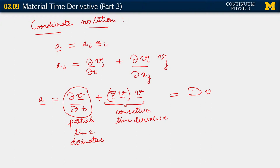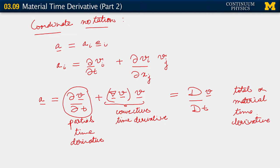The sum of the two is sometimes written as capital D of V with respect to time. This is called the total, or material time derivative — total because it's accounting not just for this immediate explicit dependence upon time, but also the fact that the spatial argument itself varies with time. So you're really picking up all of the variation with respect to time by doing this.